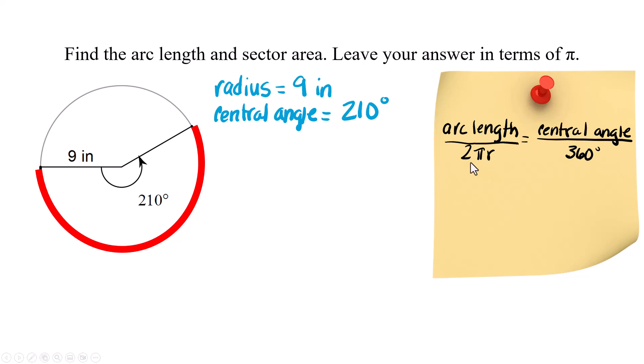Arc length over 2πr equals central angle over 360. So here's what you're looking at. 2π times radius is the circumference. We're going to compare part of the circle to the whole circle.